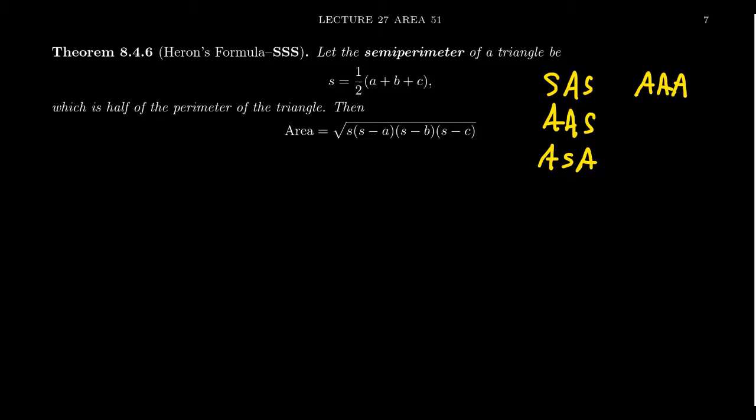For an angle-angle-angle situation we need at least one of the sides. Another situation to bring up is the side-side-angle situation — the so-called ambiguous case. The problem with the ambiguous case is that, as the name suggests, it's ambiguous. Given side-side-angle you might have no triangles, one triangle, or two triangles, so there's not going to be one unique formula for that.